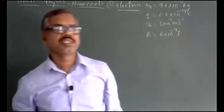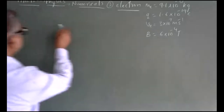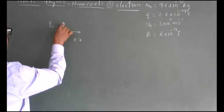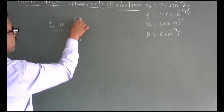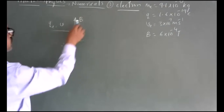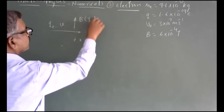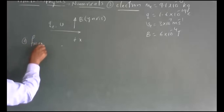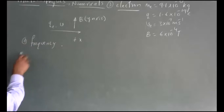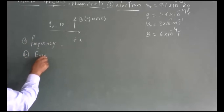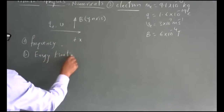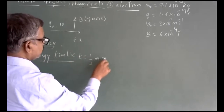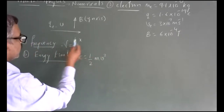In this numerical, the electron is moving along the positive x-axis with velocity v, and the magnetic field is perpendicular to it in the y-direction. We need to calculate the frequency and the kinetic energy. Energy means kinetic energy.